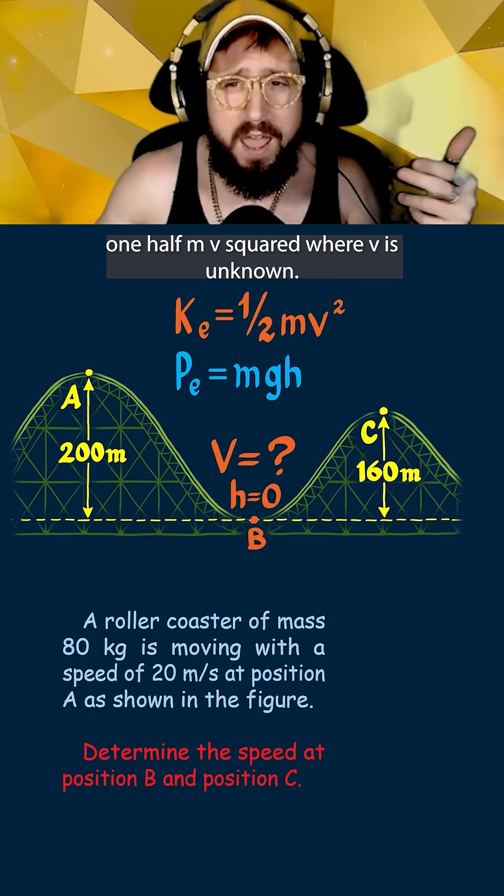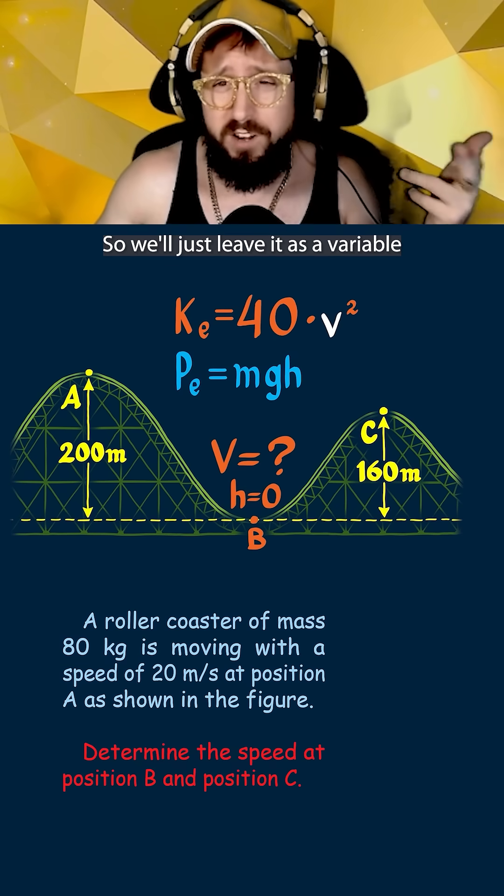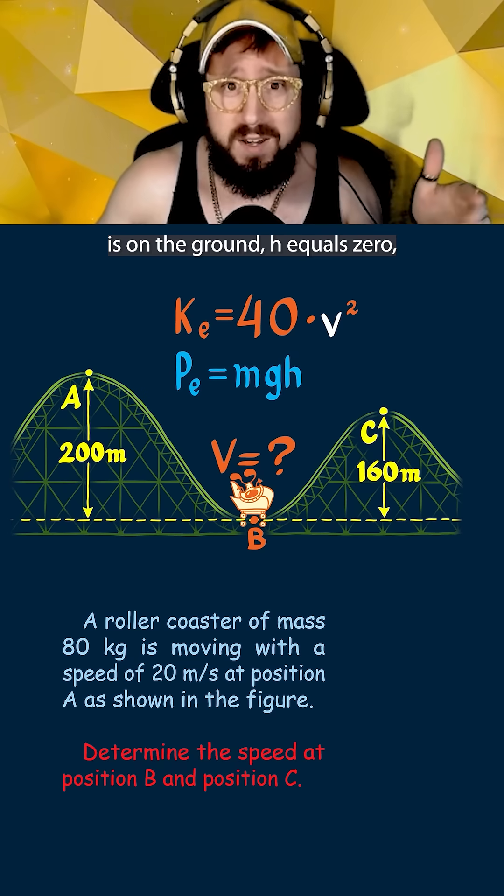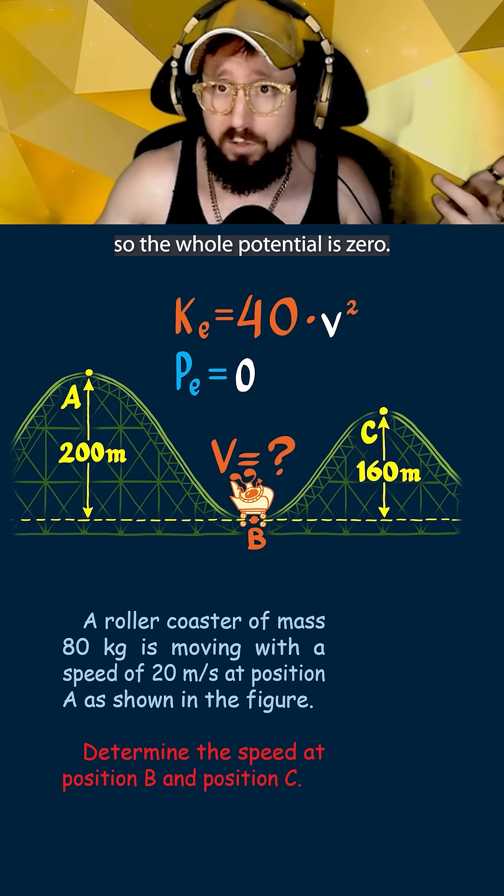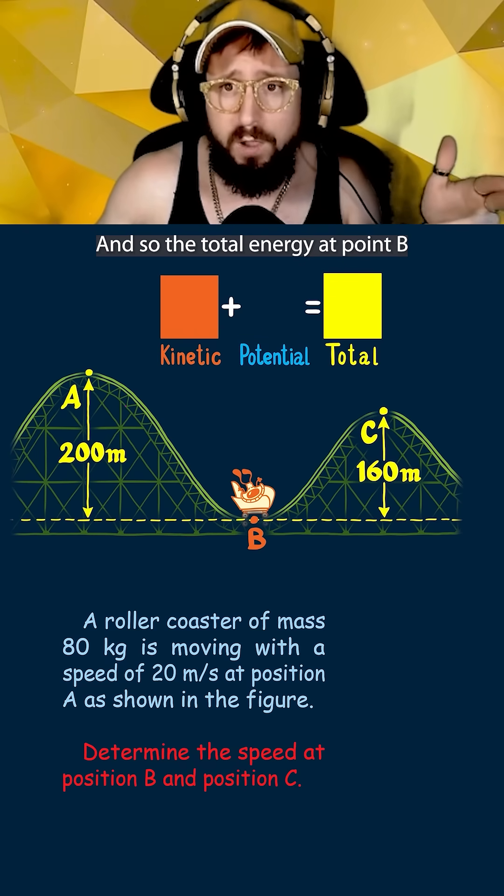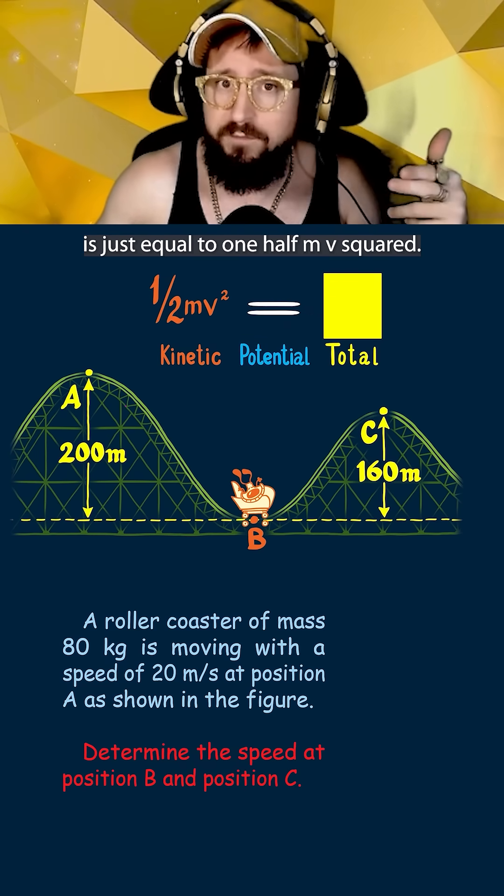Here kinetic is again one-half mv squared where v is unknown so we'll just leave it as a variable and the potential is mgh but since the roller coaster is on the ground h equals zero so the whole potential is zero. This shows how all the potential energy has transferred into kinetic energy and so the total energy at point B is just equal to one half mv squared.